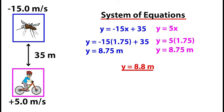And in this case, our y variable of 8.75 meters is how far I go before I hit the mosquito. 8.8 meters to two sig digs.